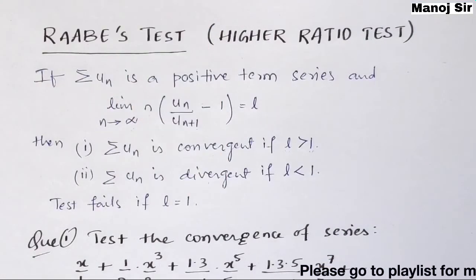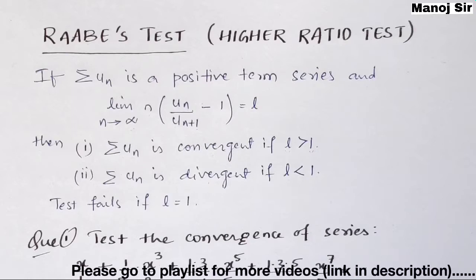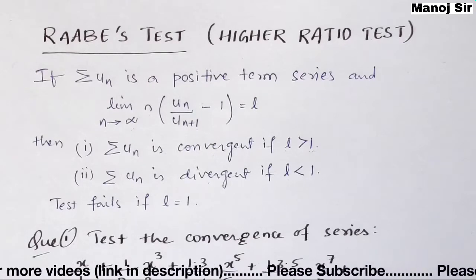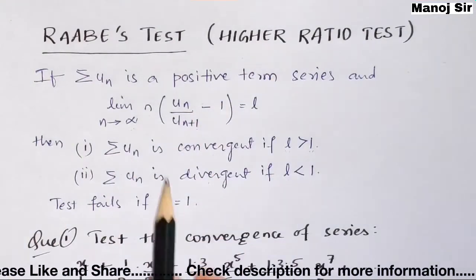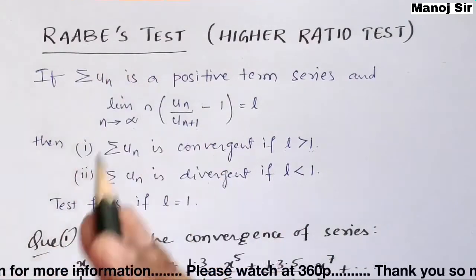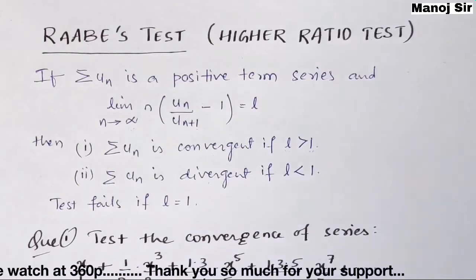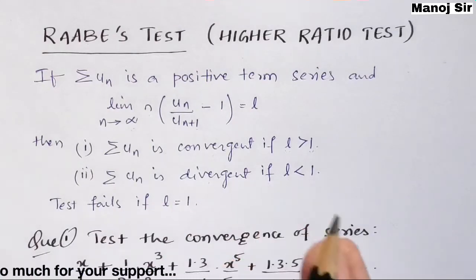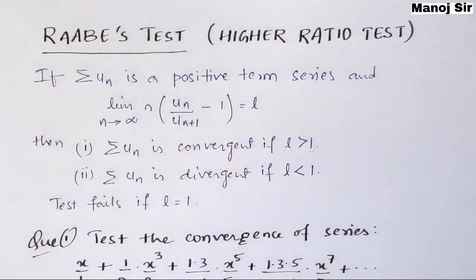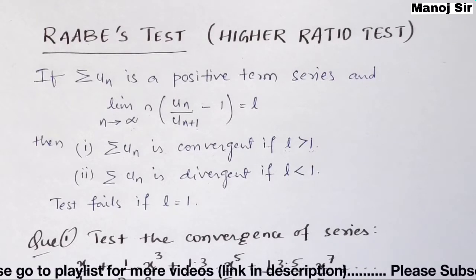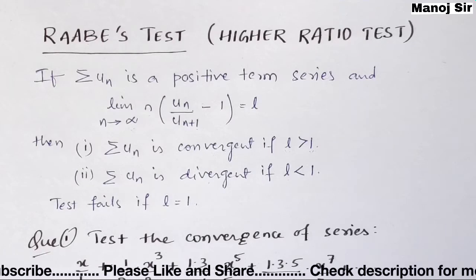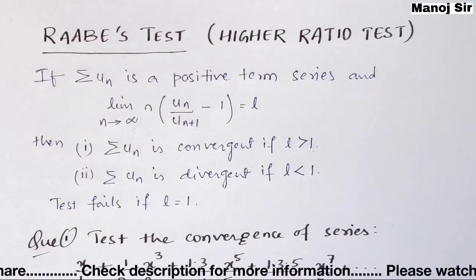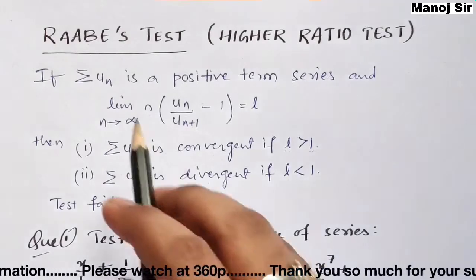In the info button and in the description box below you will get the complete playlist of infinite series. Welcome to video number 17. In this video we are going to start Raabe's test, which is also known as the higher ratio test. This test is very important but it is not used directly — it is used in support of some other test when that other test fails. Before I start, please subscribe to my channel, hit the like button, and share the playlist of this chapter with your friends.